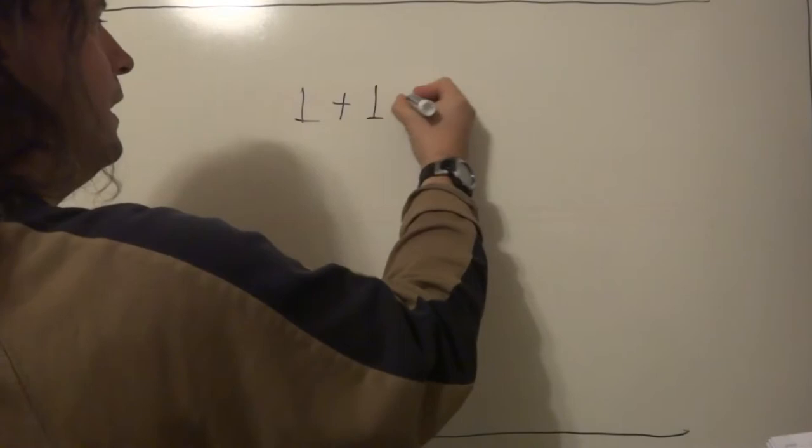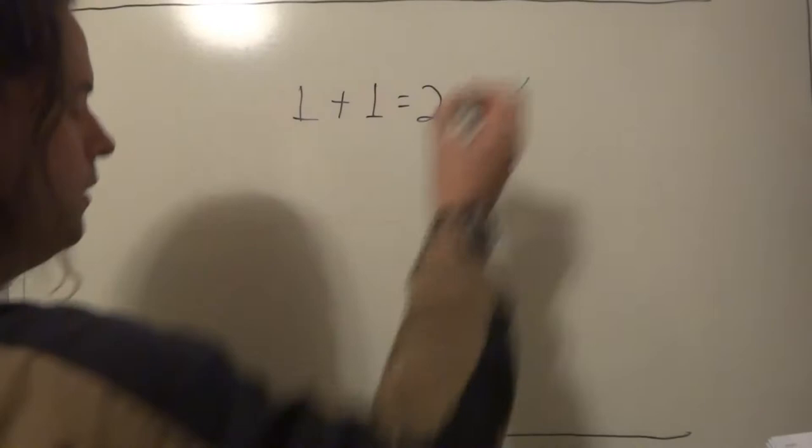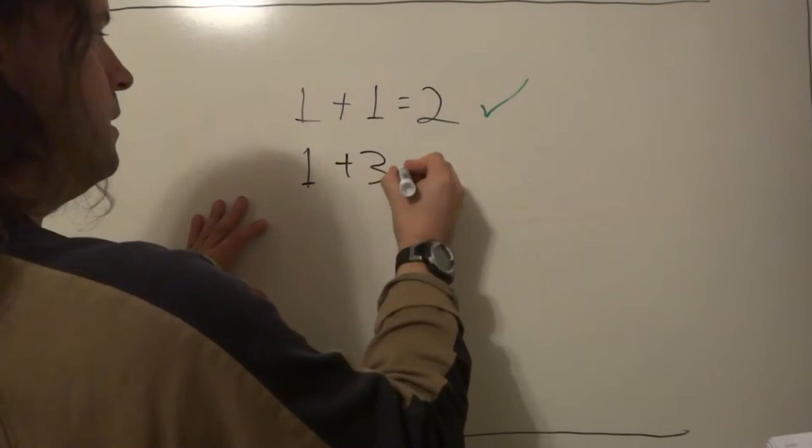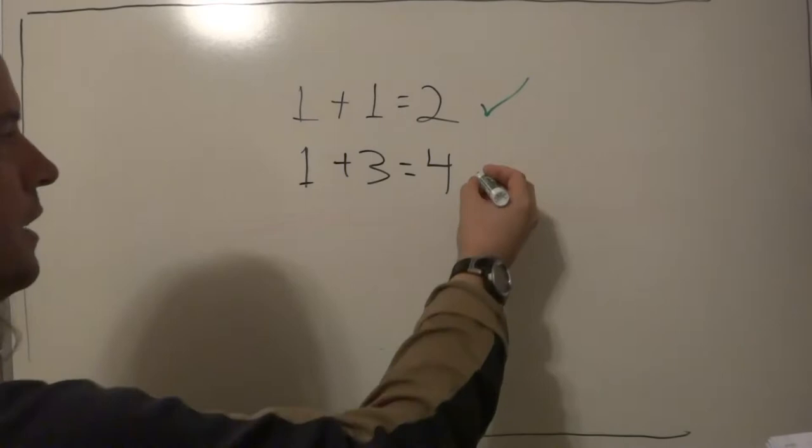One and one equals two. Is that correct? Of course. How about one plus three equals four? Is that correct? Of course it is.